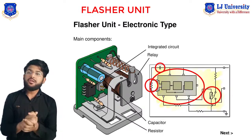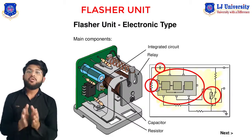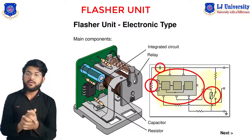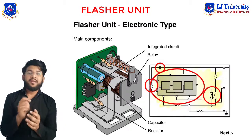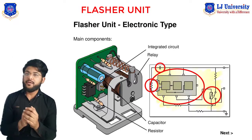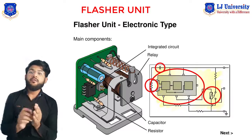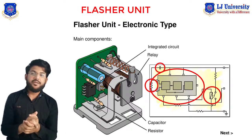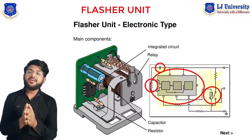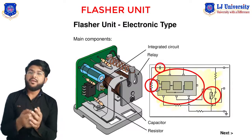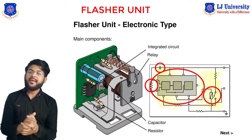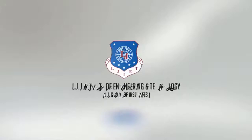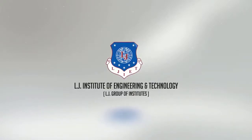That covers the flasher unit. We discussed the basic lighting systems, reflectors, lenses, and the flasher unit. I hope you have a clear idea about the reflectors, lenses, and the flasher unit. If you have any queries, please let me know in the comments — I will try to solve them as soon as possible. In the next lecture, we will discuss some interesting topics about headlights and different types of lenses in detail. I hope you liked this video. Thank you so much. Stay tuned. Goodbye.